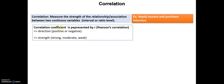The correlation coefficient provides two kinds of information for us. The first one is direction — it tells us which directional relationship we have, which may be positive or negative. The second piece of information it provides is the strength of the relationship between two variables, which may be strong, moderate, or weak.